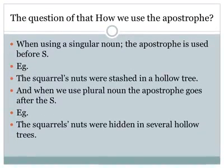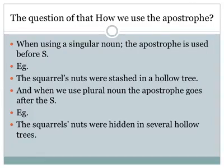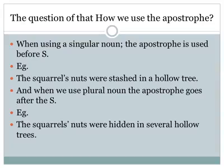The question is how we use the apostrophe. When using a singular noun, the apostrophe is used before s. For example, the squirrel is singular here, so we put the punctuation mark before the s.